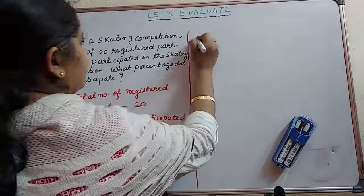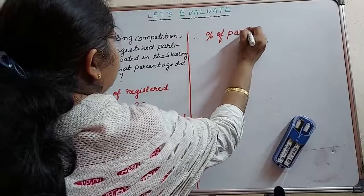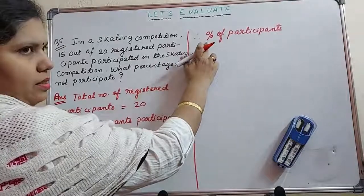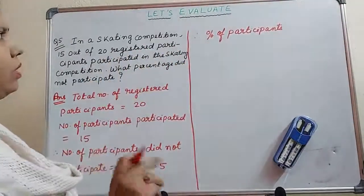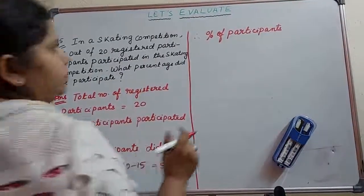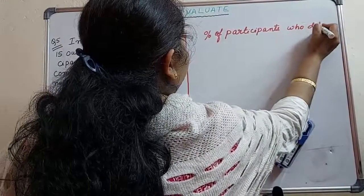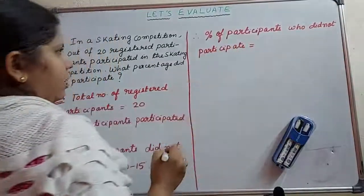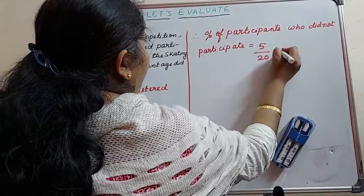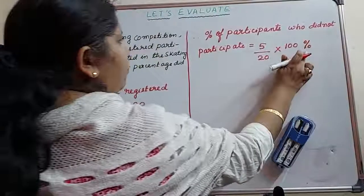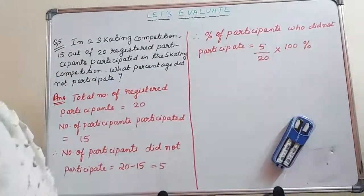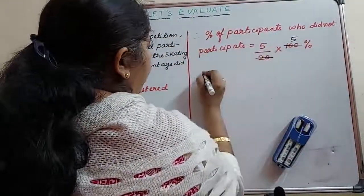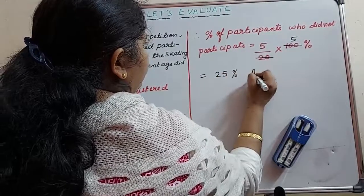Therefore, percentage of participants who did not participate equal to 5 out of 20 into 100, and don't forget to put the percentage symbol here. Now we will solve it. We know that 2 times 5 is 10, so 20 into 5 is 100. And now what we will get: 5 into 5 equal to 25 percent. So this is your answer.